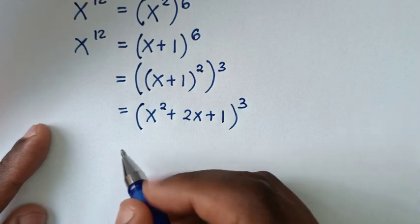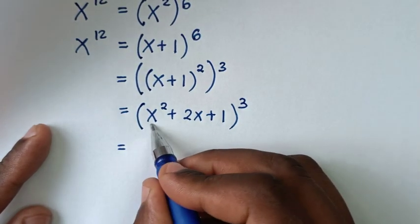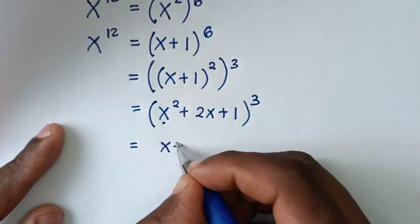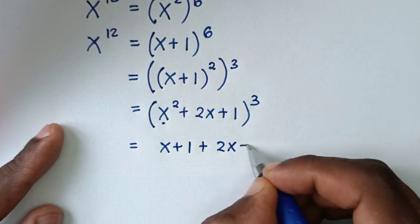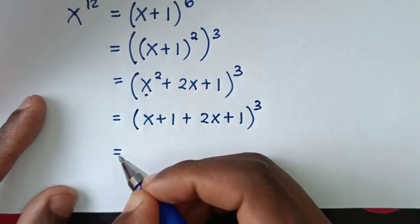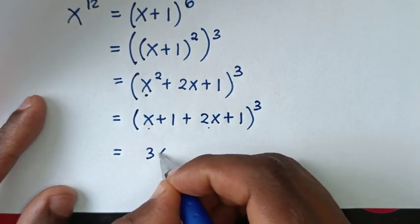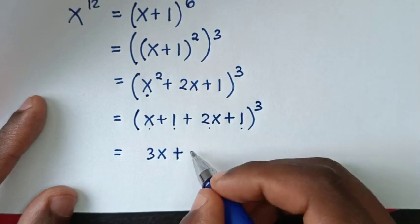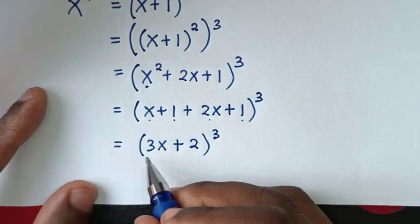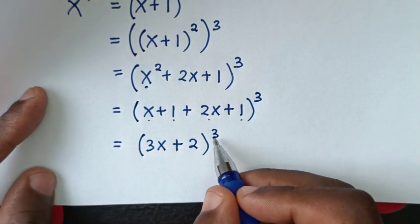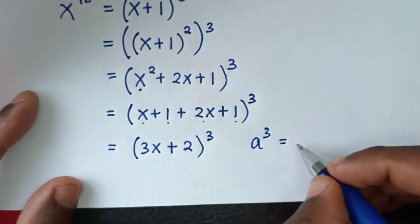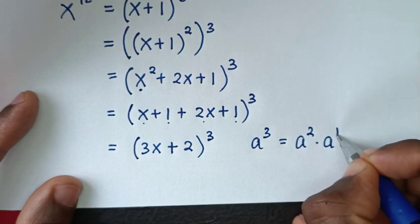In the next step, we substitute x squared equals x plus 1, so x squared plus 2x plus 1 becomes (x plus 1) plus 2x plus 1, which simplifies to 3x plus 2, all to the power of 3. This expression (3x plus 2) cubed is in the form a cubed, which equals a squared times a to the power 1.